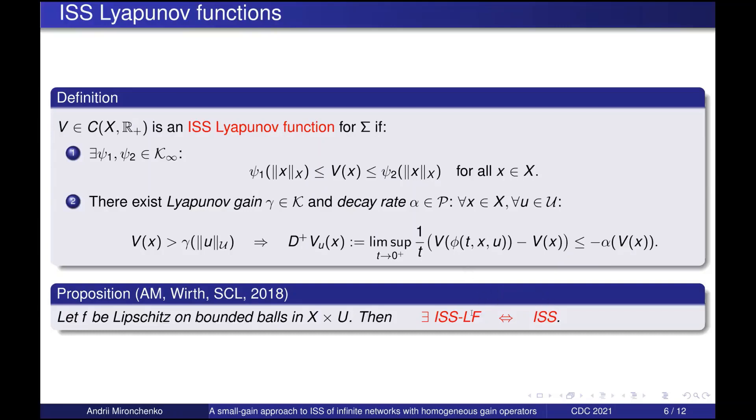It is not hard to show that if there is an ISS Lyapunov function, then the system is ISS. And the converse can be shown as well if F is regular enough. This makes Lyapunov functions a powerful tool to study ISS. But it is not easy to construct these functions for networks of a large size.